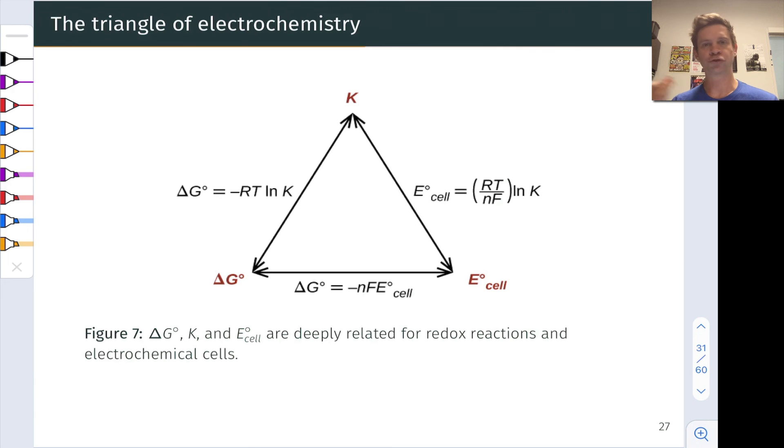This slide just shows a triangle of the relationships we've developed so far between the equilibrium constant K at the top, the standard free energy change ΔG°, and the standard cell potential E°_cell. And I won't go through these equations in detail. I'll just note that all of these are relations we've developed already. ΔG° equals -RT ln K came from earlier discussions of chemical thermodynamics. This equation at the bottom came from a couple of slides ago, and this equation came from the last slide where we related E°_cell to the value of the equilibrium constant for the redox reaction in a galvanic or electrolytic cell.